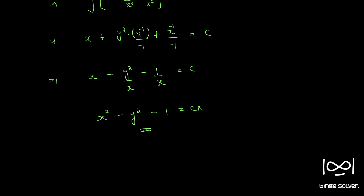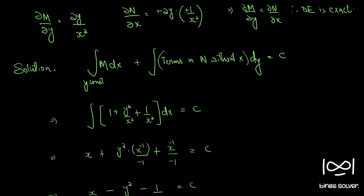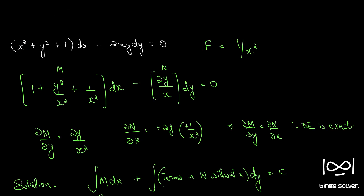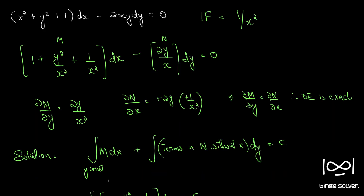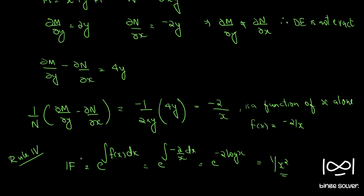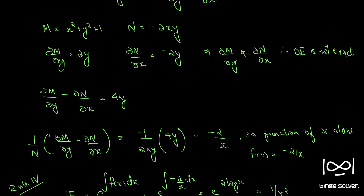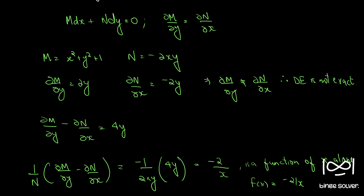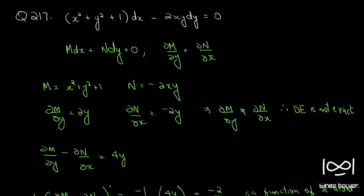So the final solution is x² − y² − 1 = cx. These are the steps; we obtained our integrating factor as 1/x² by applying Rule 4. If you have any confusion about the rules, you can refer to the previous videos where I have discussed the rules for finding integrating factors. This is the solution to Question 217.